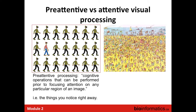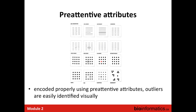Our visual processing has two types: pre-attentive and attentive. The pre-attentive type involves cognitive operations that can be performed prior to focusing attention on any particular region of an image — that's what you'd use to detect Waldo on the left part of the image, where you can find him very easily. The attentive visual processing is what you'd use to find Waldo on the beach. We want to use the pre-attentive type to detect outliers, encoding data properly using pre-attentive attributes so outliers can really be picked up by your visual system.